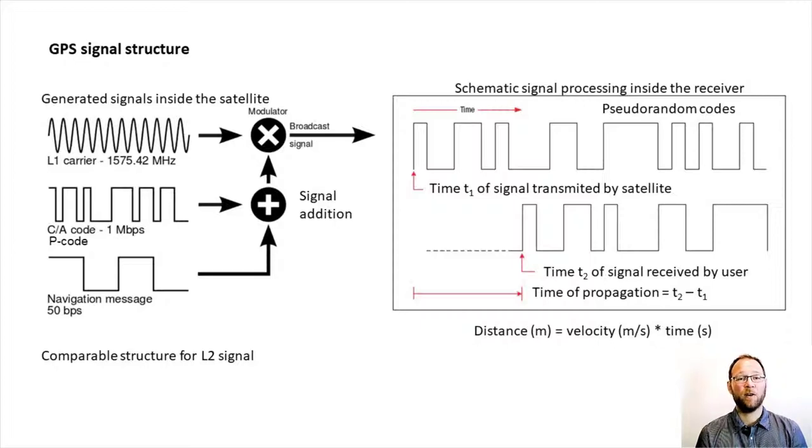On each frequency for each satellite there is a different repeating pseudorandom code, a sequence of ones and zeros modulated on the carrier wave. This is analogous to a repeating voice on the radio.